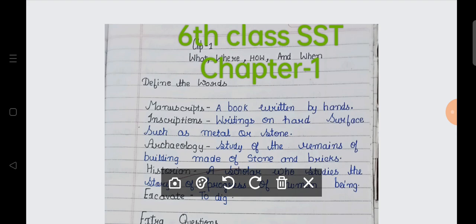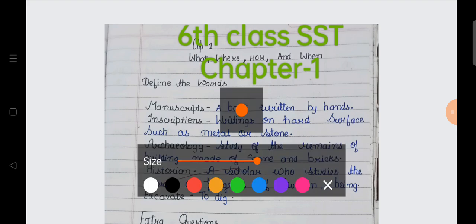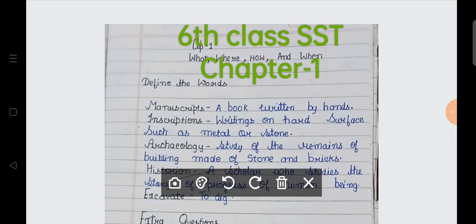First is manuscripts. The meaning of manuscripts is a book written by hands. Next is inscriptions. Writings on hard surface such as metal and stone.